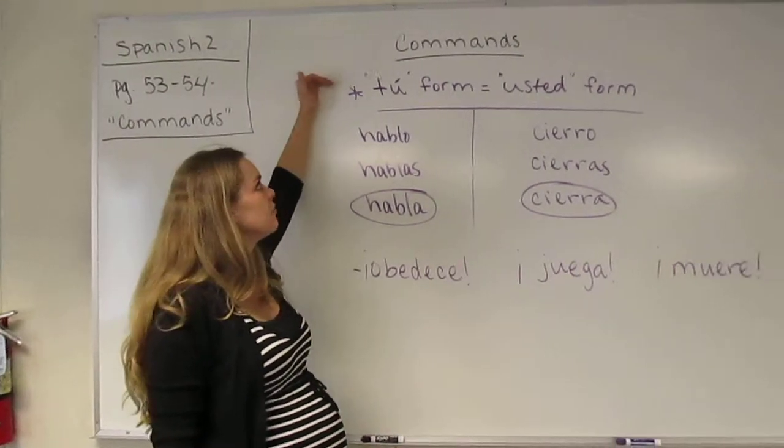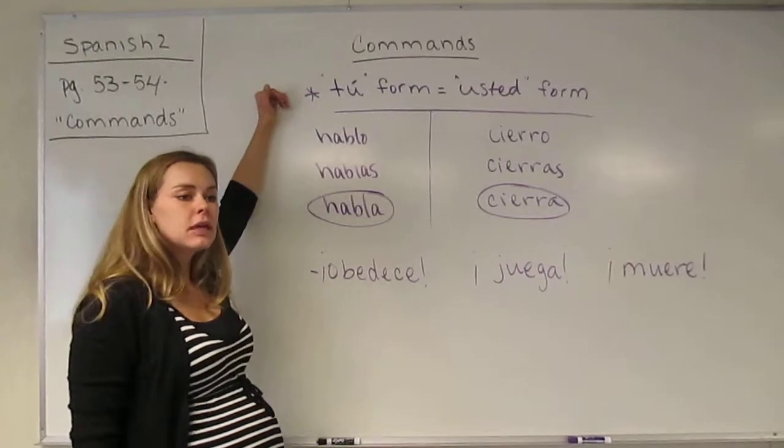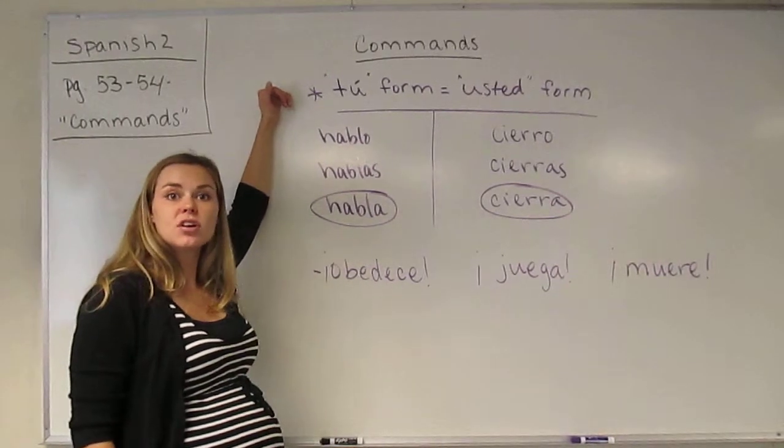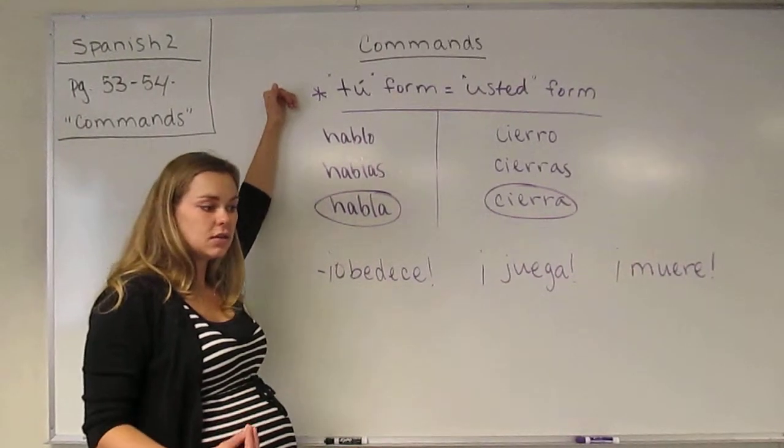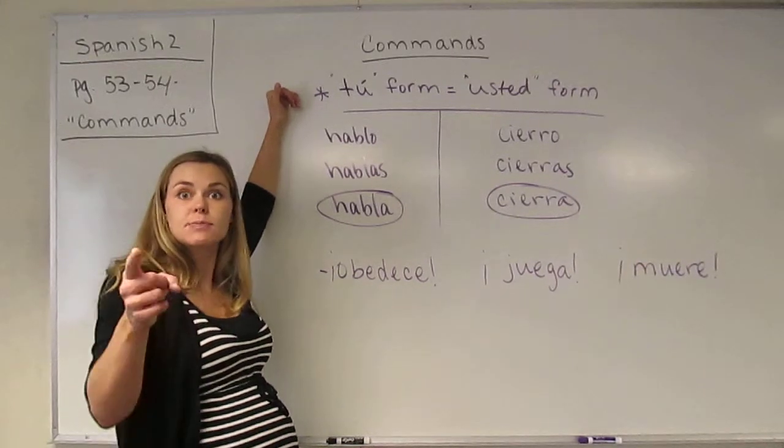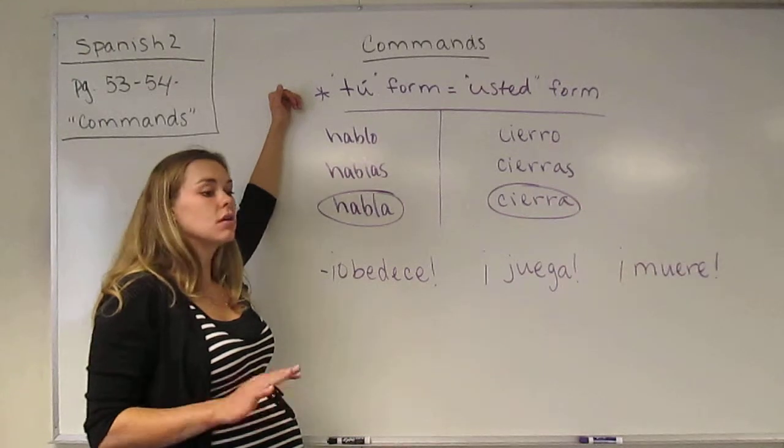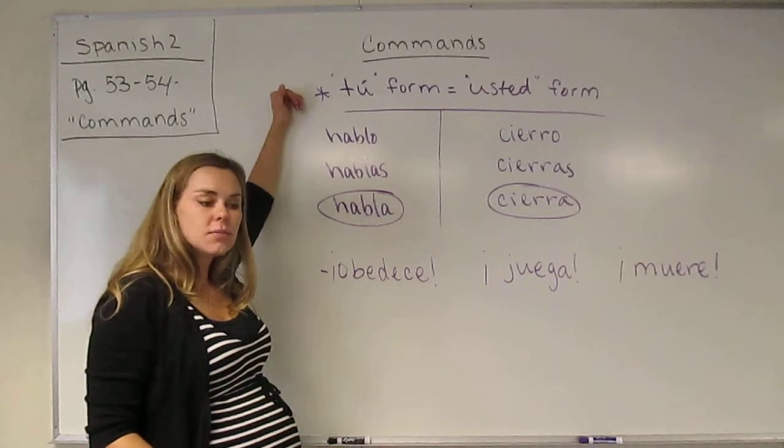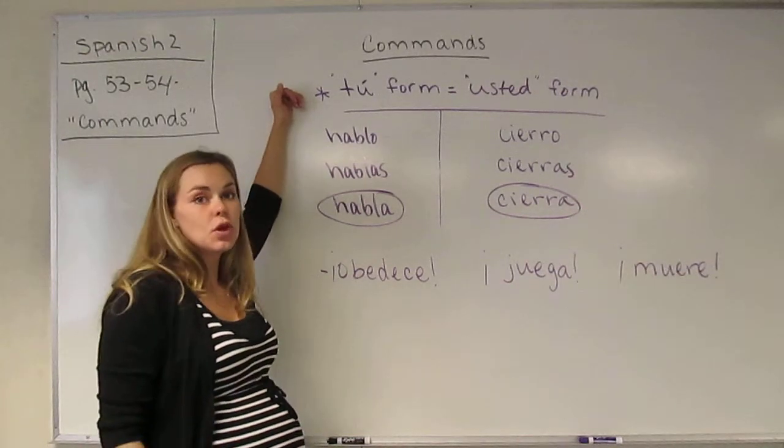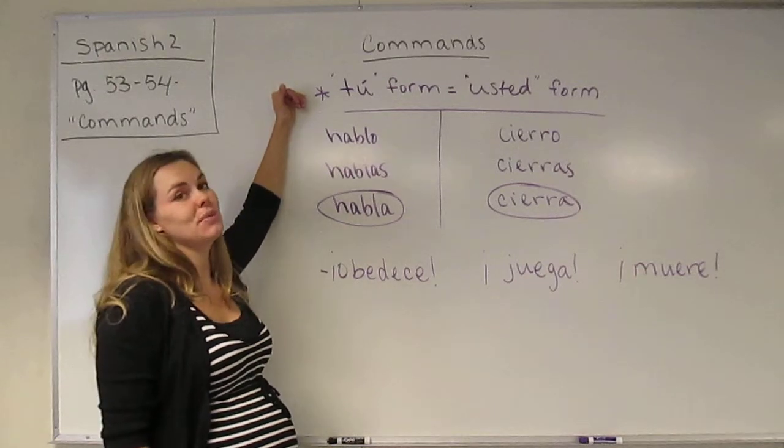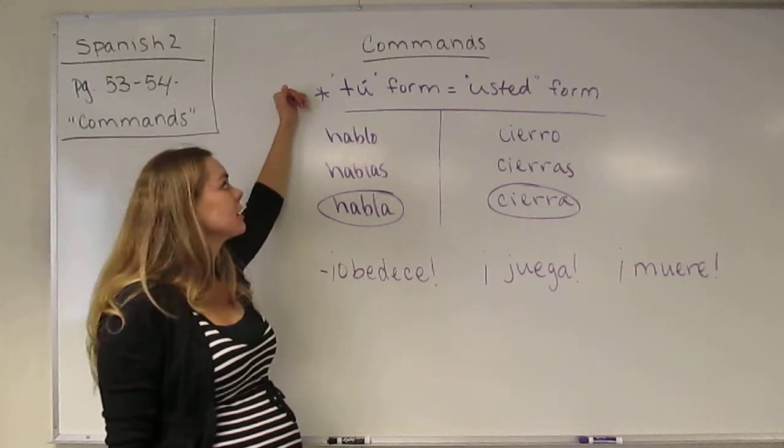The first type of command form you will learn is the tú form. Now, we use the same verb usually if we say I speak, we would tell somebody speak, do it. And if you're talking to a little person and you're using this command form, you want them to do something, you can't just use the tú form. Sorry, but it gets a little bit more complicated than that.